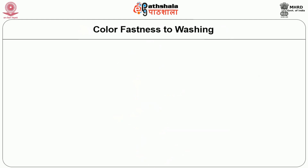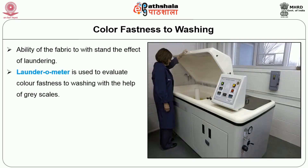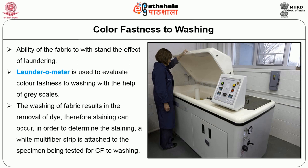Color fastness to washing is the ability of fabric to withstand the effect of laundering. Normally at home, washing is done using detergent for half an hour or one hour. We check whether any color difference, bleeding, or staining occurs. The industry uses a Laundro meter to evaluate color fastness with the help of gray scales. Washing results in removal of dye, so staining can occur on adjacent fabric.